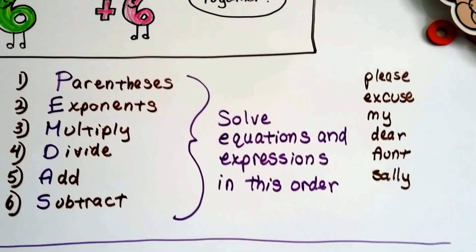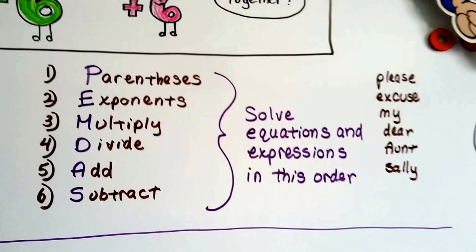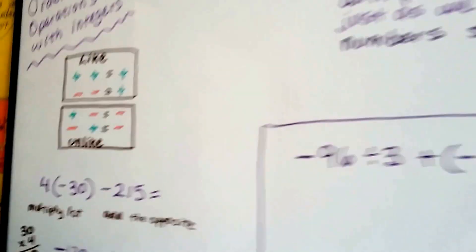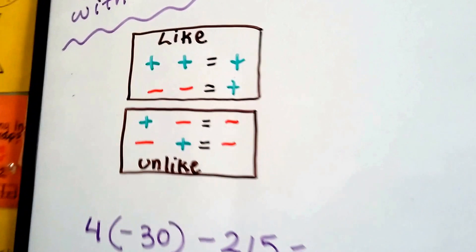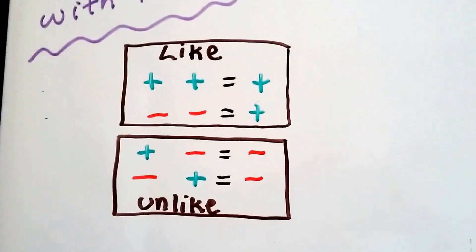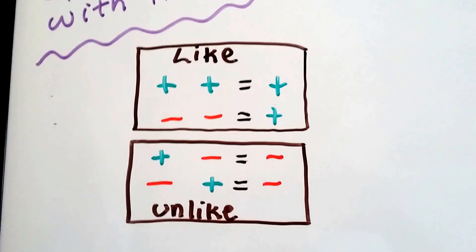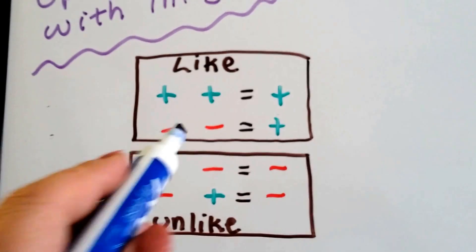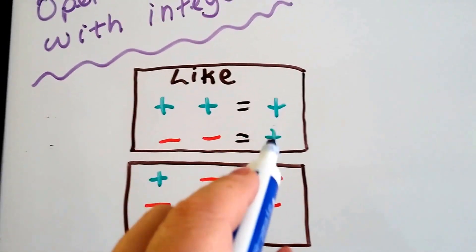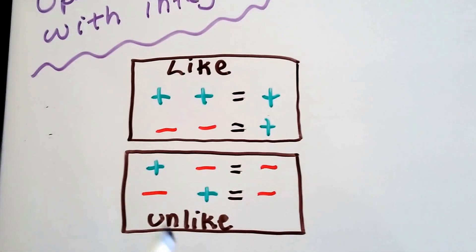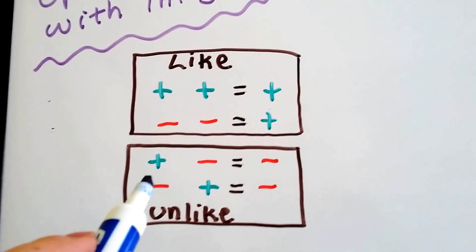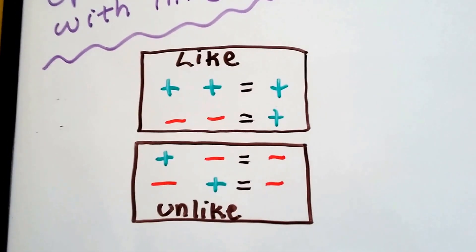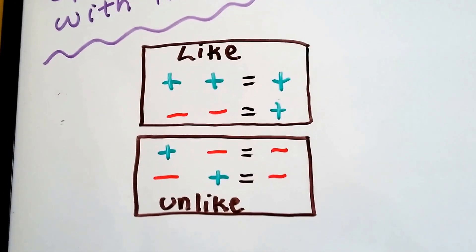I don't know what Aunt Sally did, but it's been decades and she still hasn't been excused, has she? So if you remember from our previous videos, when we have multiplication and division problems and there are like signs, it's going to be a positive answer. And in multiplication and division, if they have unlike signs, it's going to be a negative answer.